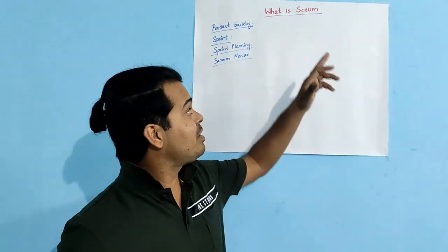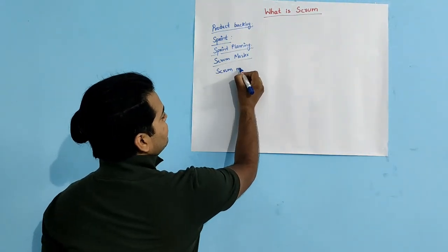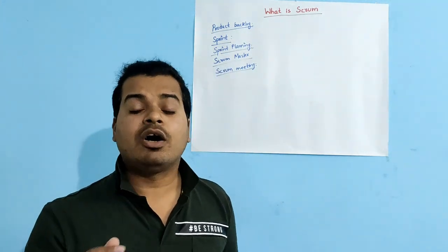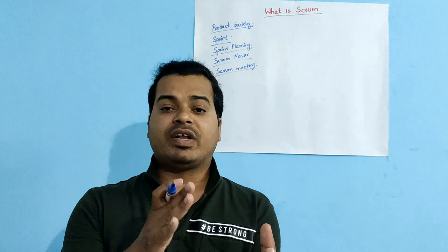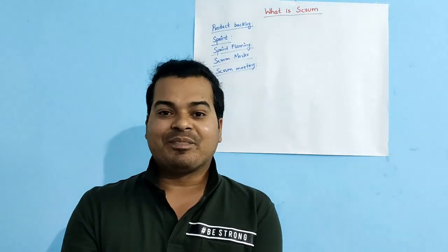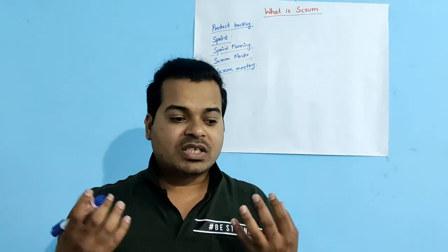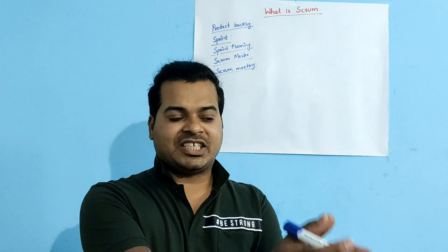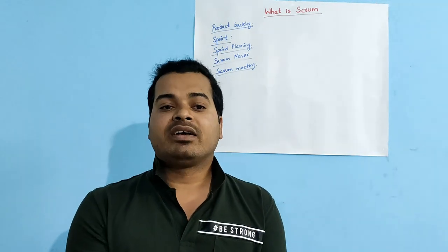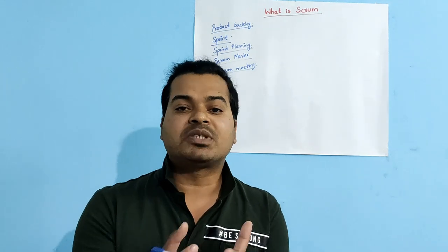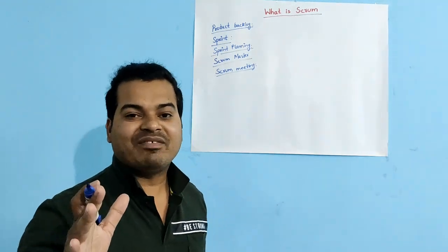The next concept in Scrum methodology is the Scrum Meeting, also called the Daily Standup Meeting. It is a meeting conducted by the Scrum Master on a daily basis, strictly bounded to 10 to 15 minutes. Business analysts, developers, test engineers, and product managers all participate. In this meeting, the Scrum Master asks each individual three questions: What did you do yesterday? What are you going to do today? And are there any blockers or obstacles for you?